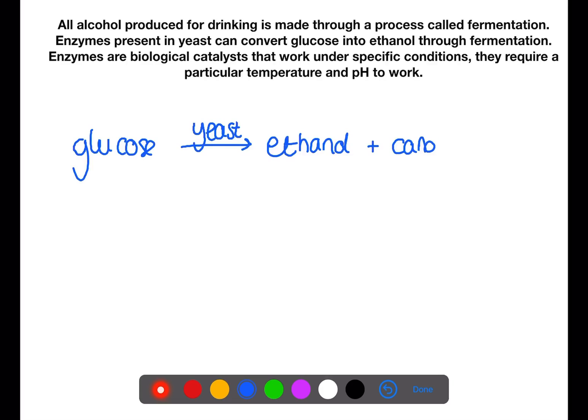In the production of ethanol from glucose through fermentation, we also produce carbon dioxide gas. This can also be represented using a symbol equation.